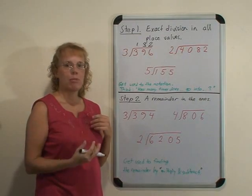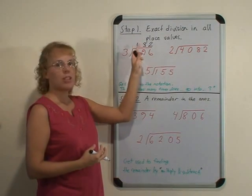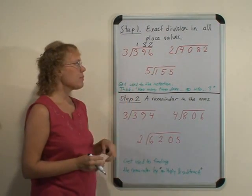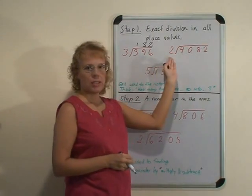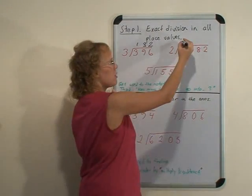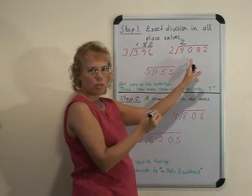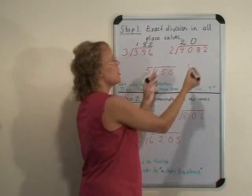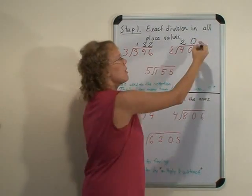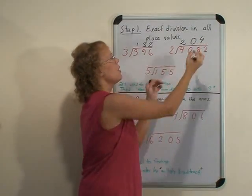Children should check it with multiplication, multiplying 132 times 3. Another example is here: 2 goes into 4 thousands 2 times, 2 goes into 0 hundreds 0 times, 2 goes into 8 tens 4 times, and 2 goes into 2 ones 1 time.